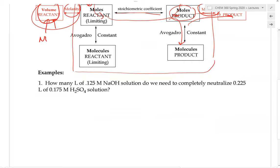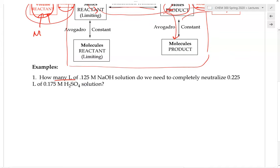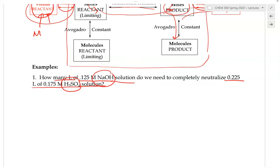In this example: how many liters of a 0.125 molar sodium hydroxide solution do we need to completely neutralize 0.225 liters of a 0.75 molar sulfuric acid solution? We have two solutions — sodium hydroxide and sulfuric acid — reacting together. It's asking how much of one reactant we need to react with the other. Since two things are reacting, there is a chemical reaction happening, so we must start with the balanced equation first.